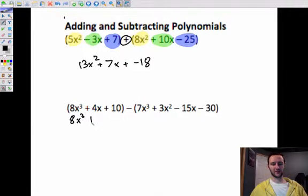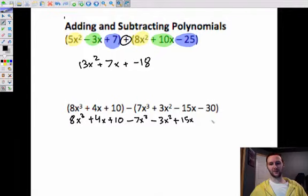The first thing that I would like you to do for this is distribute that subtraction so that you have a subtraction in front of all of these. So this is going to be minus 7x cubed, minus 3x squared, a minus and another minus cancel out and make plus 15x, and then same with 30.